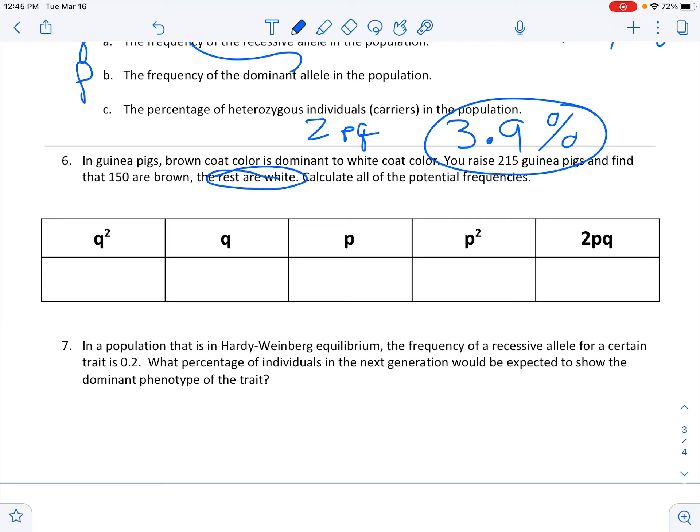So 215 minus 150 is 65 are the white phenotype. And what's that in percent? So 65 divided by the total, which is 215 equals 0.30.